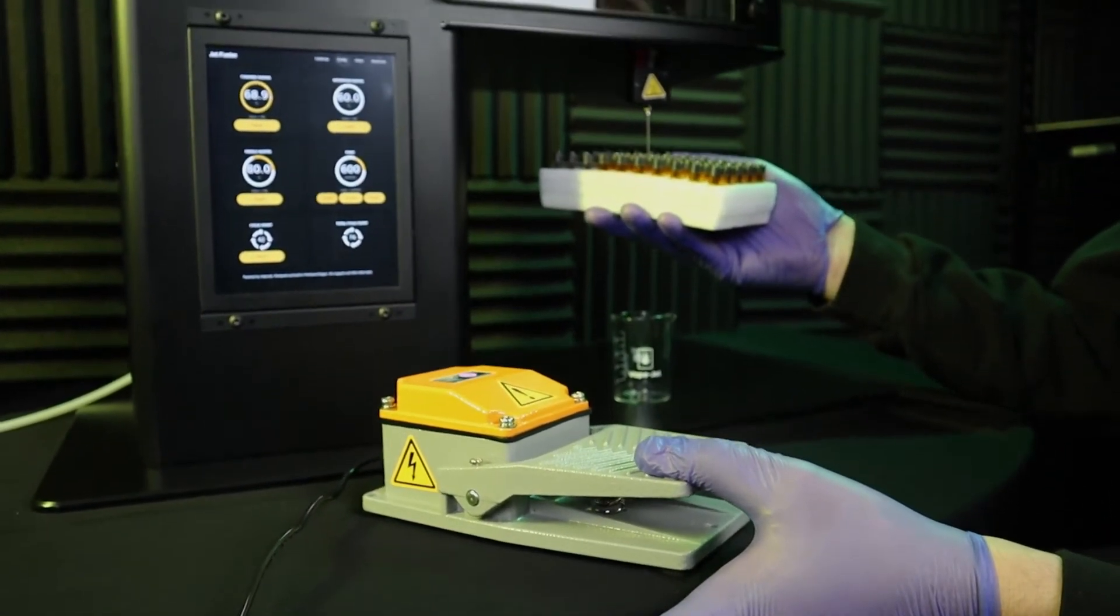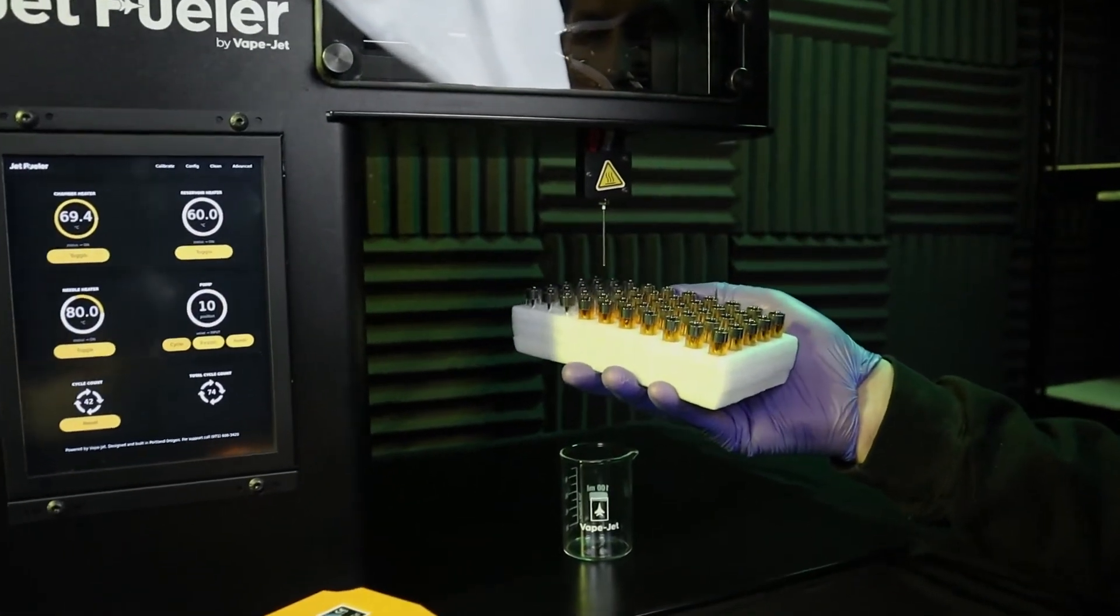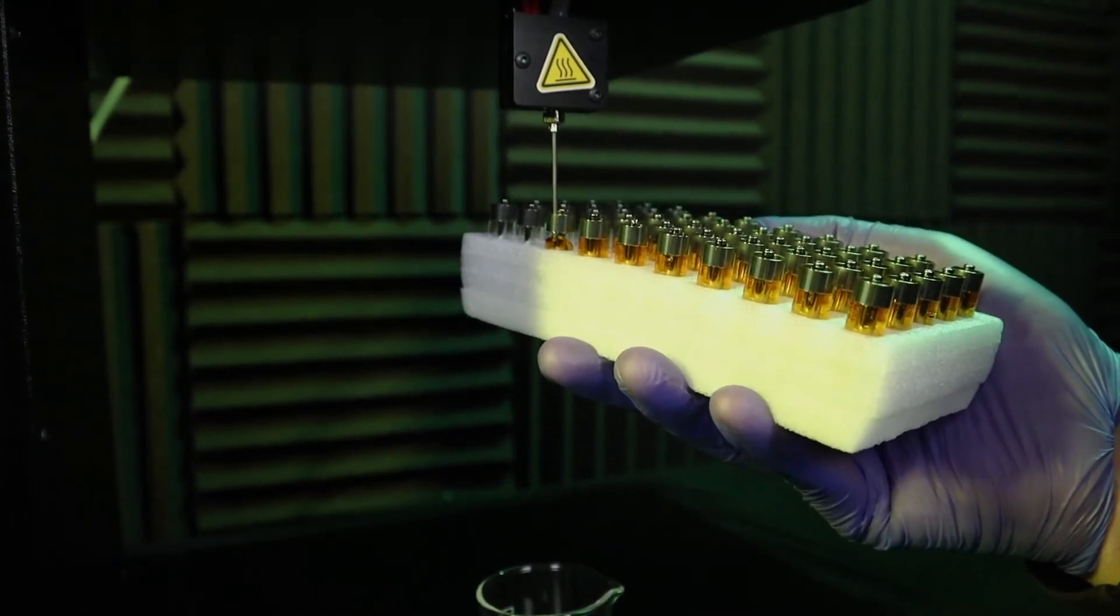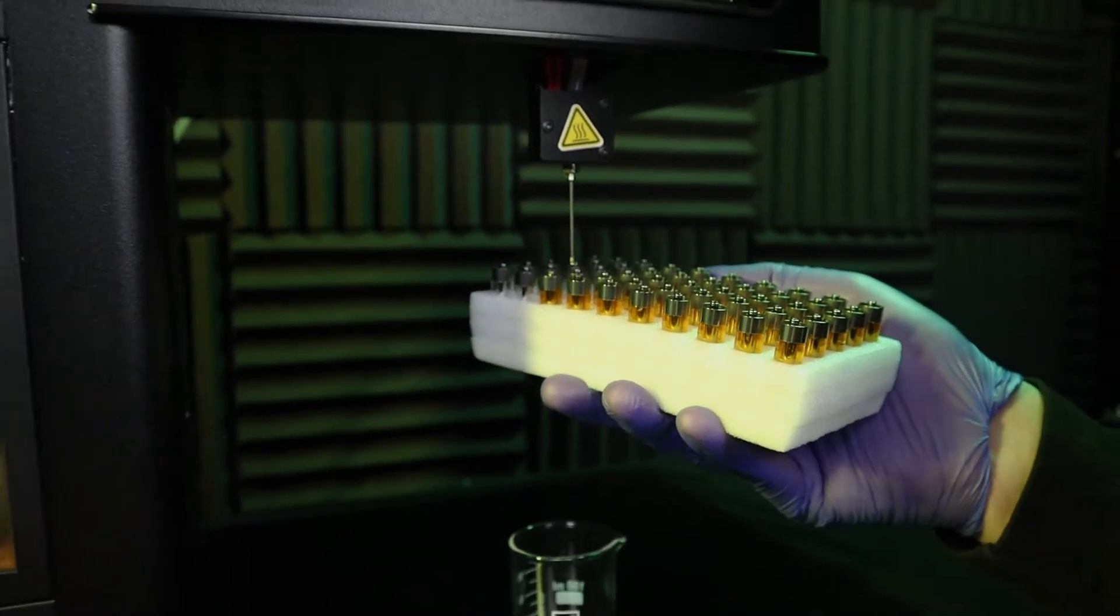Proceed with dispensing into empty containers until the reservoir is empty. The cycle counter will provide an indication as to when the reservoir is approaching empty. If bubbles are being dispensed along with liquid, then your reservoir is empty.